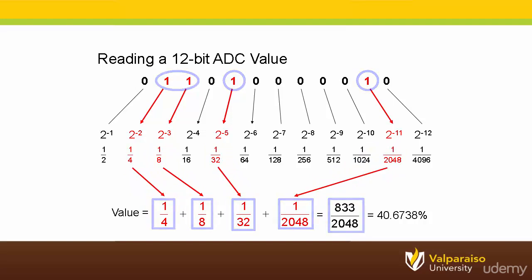Therefore, this binary number represents an analog equivalent of approximately 41% of the analog to digital converter's maximum value. Again, we will see many more examples of this in the attached handout.